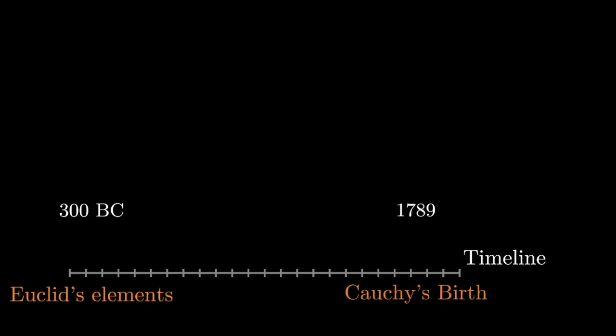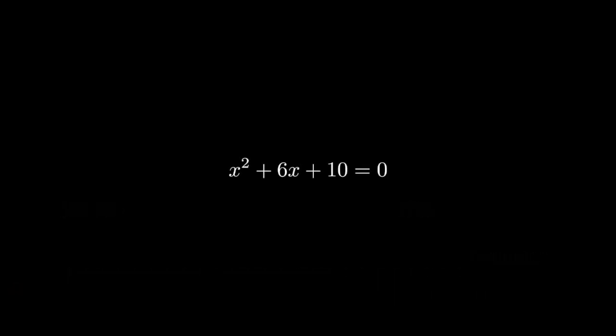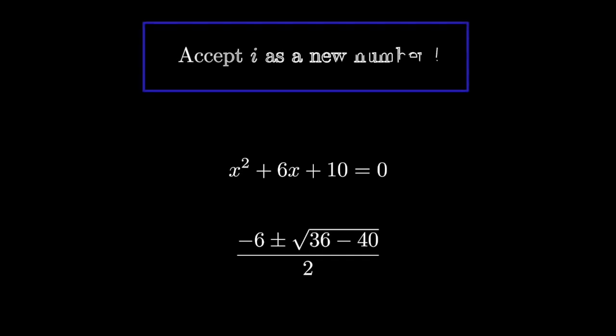And when they tell you about the history of complex numbers, they usually say this: people were solving quadratic equations and encountered negative discriminants. Being so dismantled by the inability to solve the equation, they decided to accept the root of minus 1 as a new type of numerical identity.